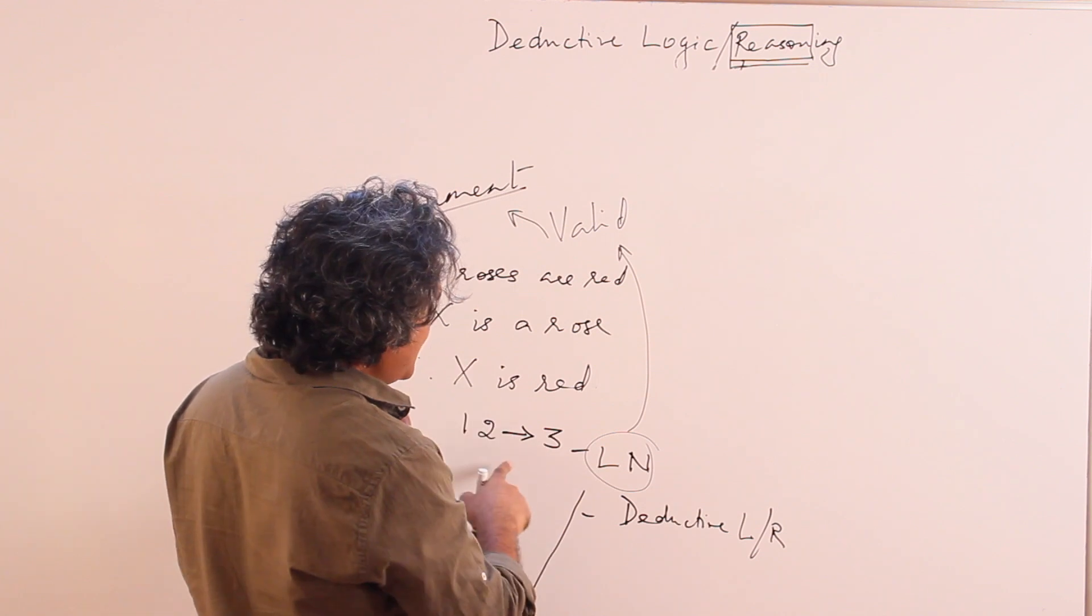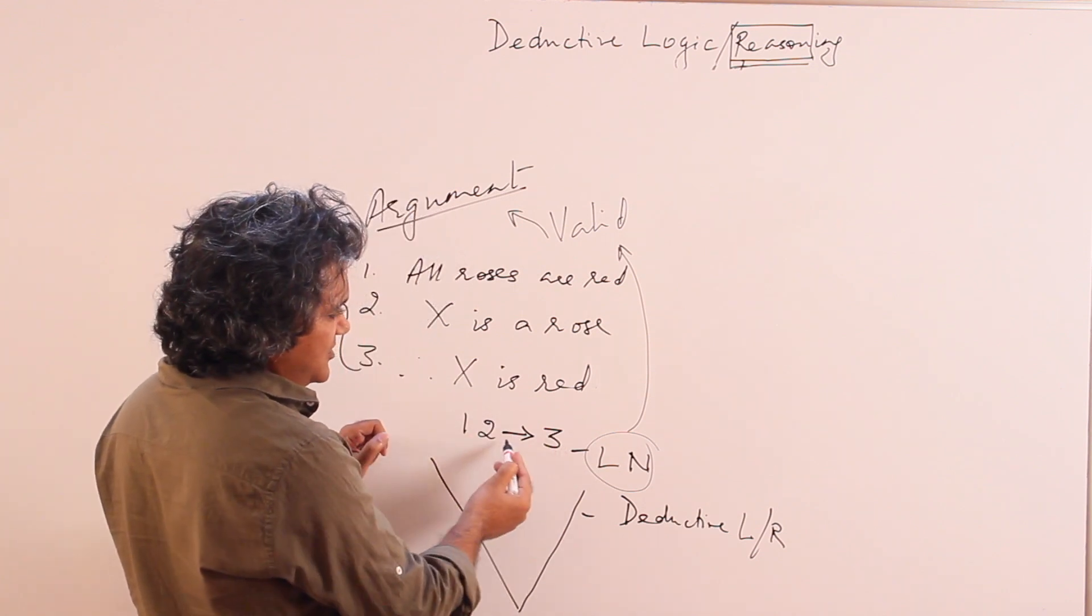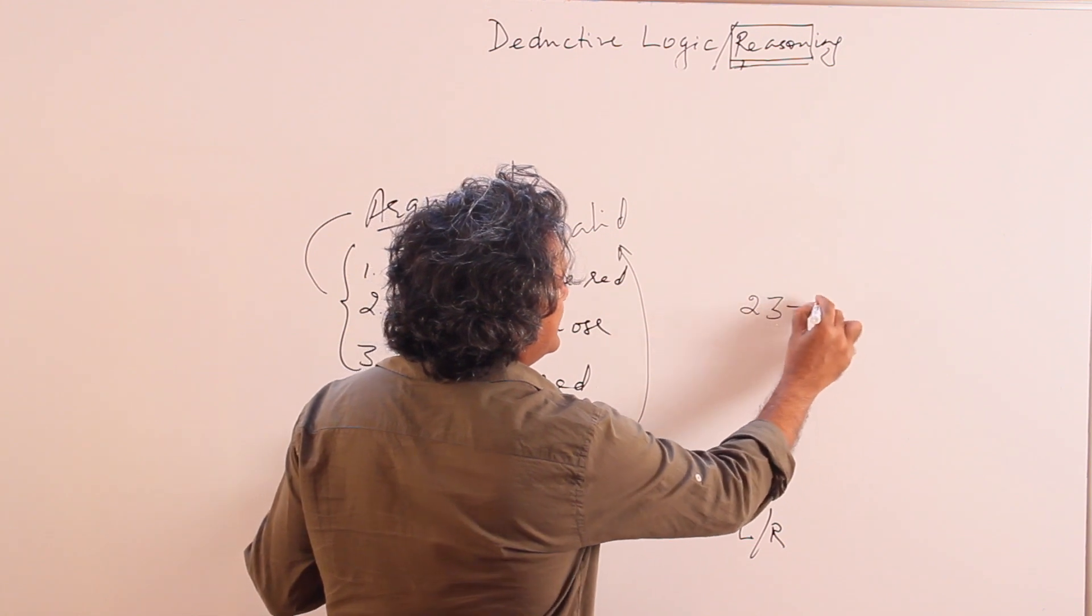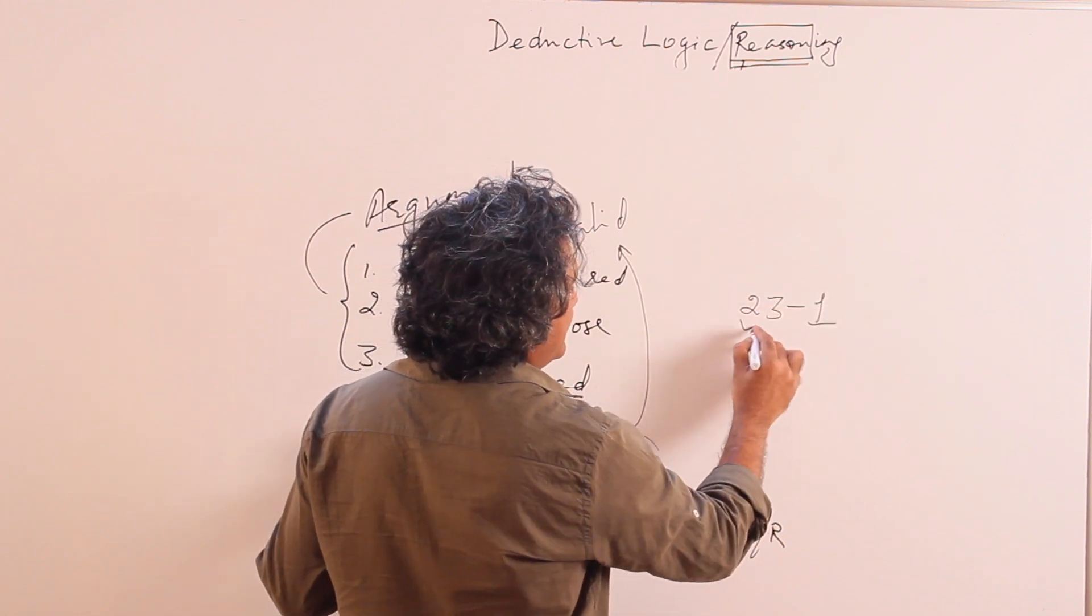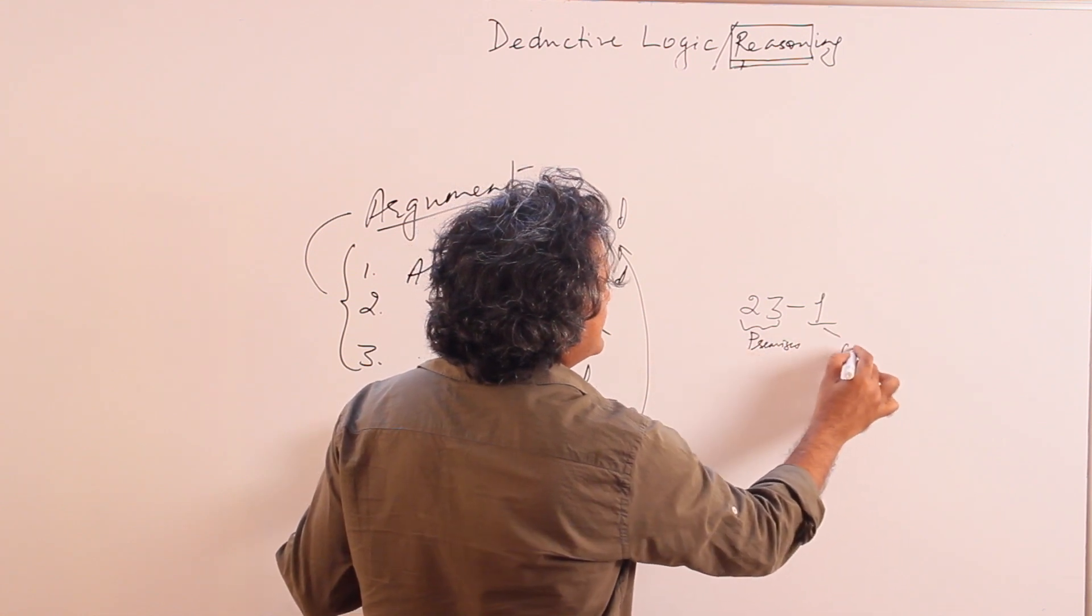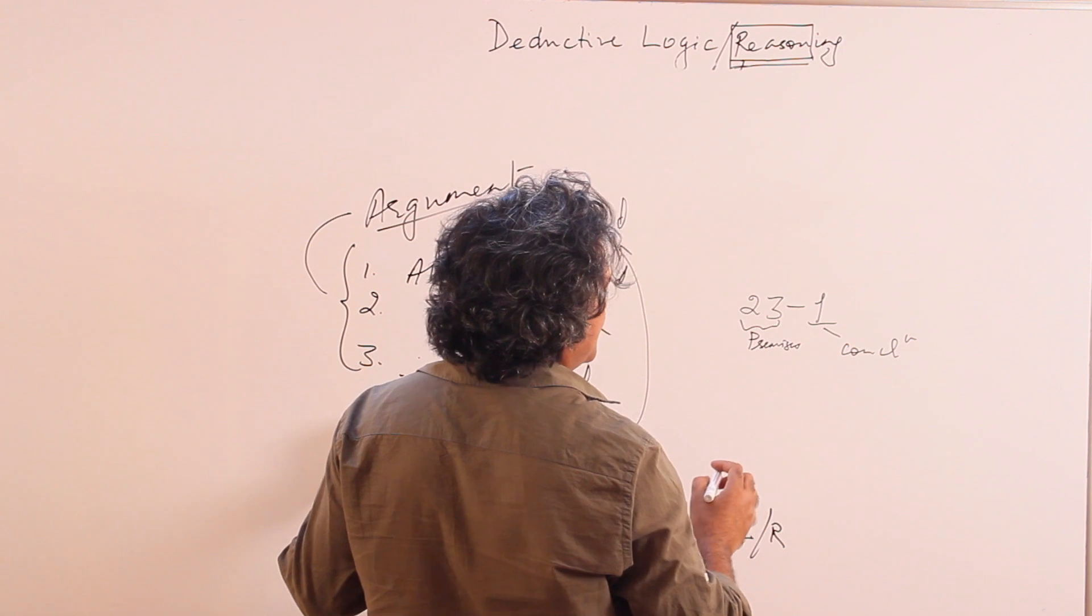Now pay attention. Suppose I change this form. Suppose I change this to 2, 3 leading to 1. Basically what I have done is I have made these into the premises and I have made this into the conclusion.